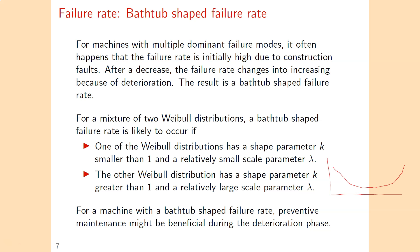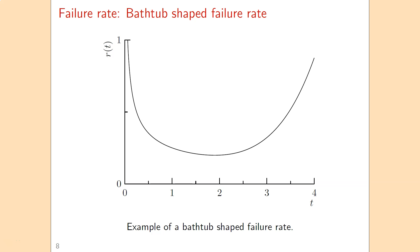When determining the optimal age-based maintenance policy with a bathtub-shaped failure rate — first going down and then going up again — you expect to perform preventive maintenance during the phase where the failure rate is increasing. Note that if you continue plotting the failure rate for large values of T, at some point it will decrease again. This is a theoretical phenomenon, as those high ages are rarely reached due to prior failure or preventive maintenance. A mixture of two Weibull distributions is still suitable for modeling bathtub-shaped failure rates.